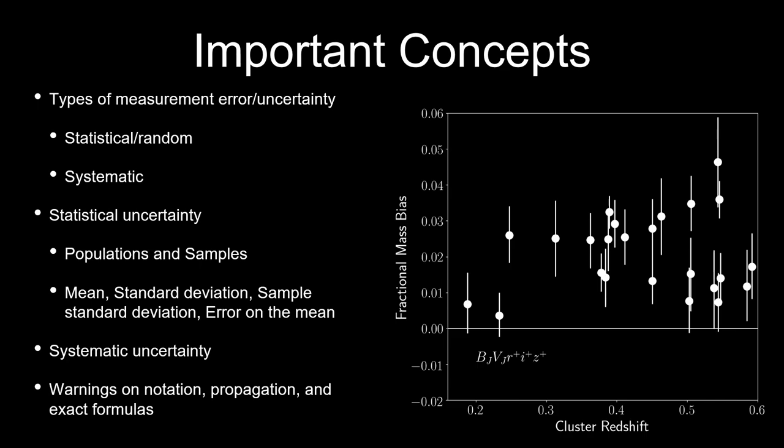I've included here a picture that's actually from my thesis. You'll see that there's a bunch of dots — those are the central data points — and then there's error bars extending out in either direction. This is a plot that is actually quantifying a systematic uncertainty, or at least one source of systematic uncertainty, in the measurement of the mass of galaxy clusters. I'll talk more about error bars and how you go about finding systematic uncertainties later on.